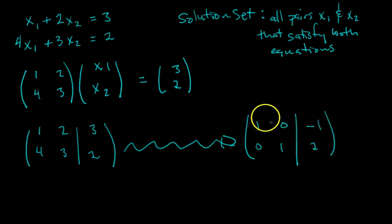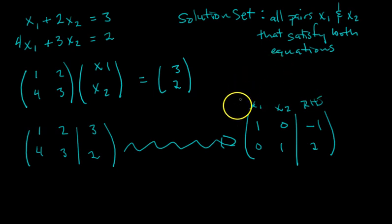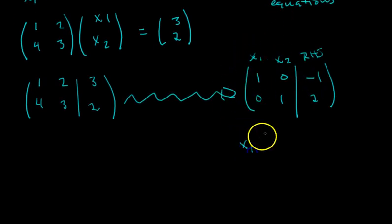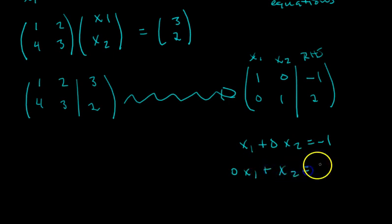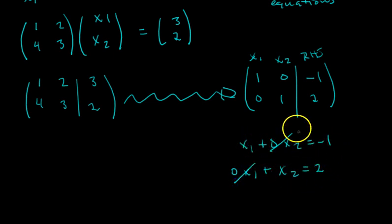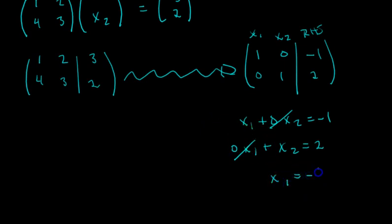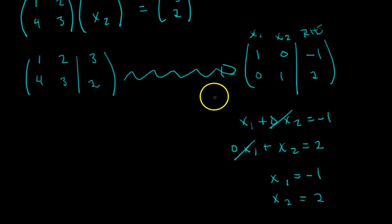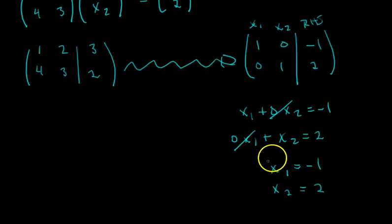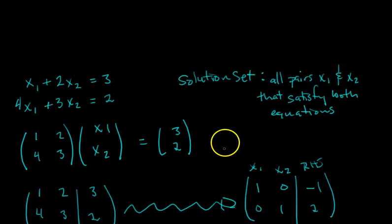We want our augmented matrix to look like this — this is the x1 column, this is the x2 column, and this is the right-hand side. If you rewrite this in two equations, you get 1·x1 + 0·x2 = −1 and 0·x1 + 1·x2 = 2. Those zero terms drop away and you get x1 = −1 and x2 = 2. Just like that, you have your solution set. In this case there's only one solution, and you can verify by plugging in −1 and 2 into the original system.